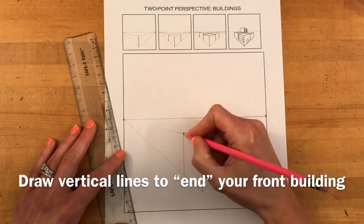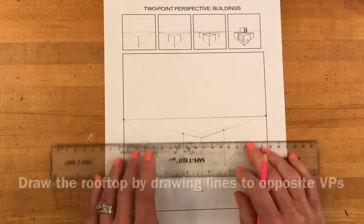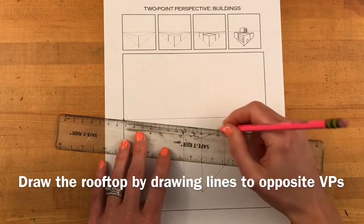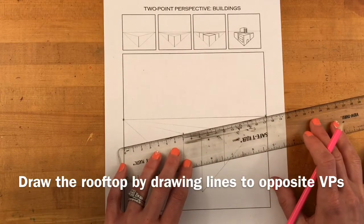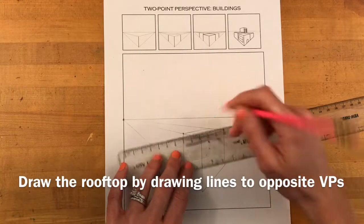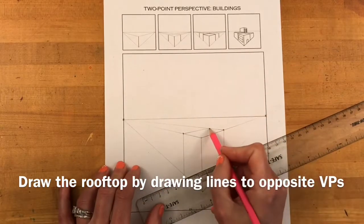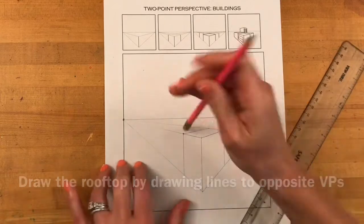Next you will draw the rooftop. Begin by connecting the right top corner to the left vanishing point and the left top corner to the right vanishing point. Where the lines cross is the back corner of that building.